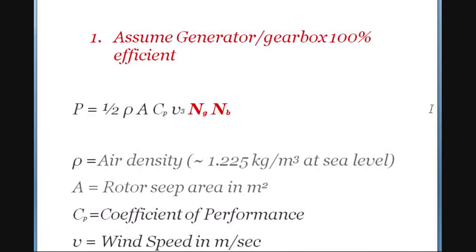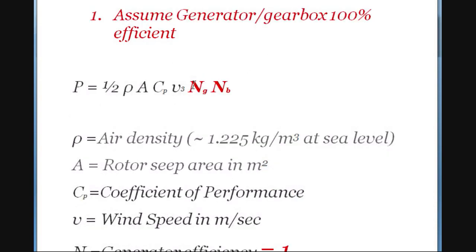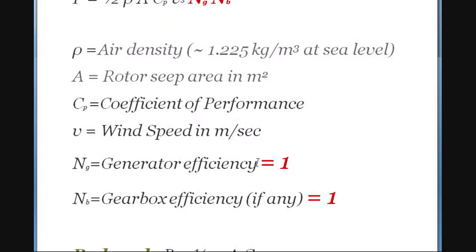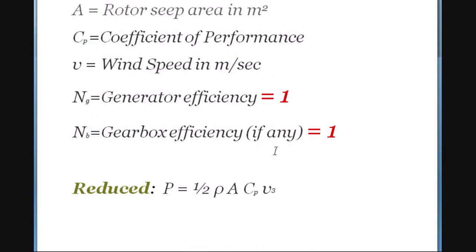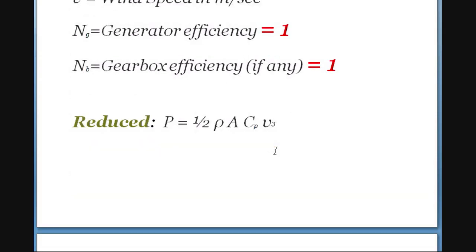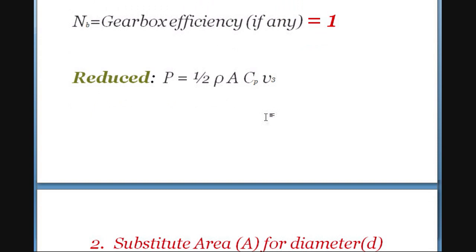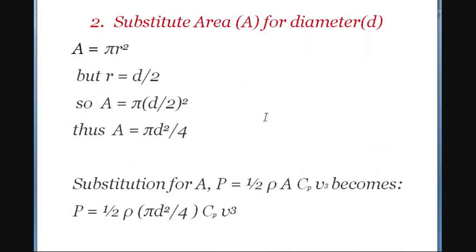So let's take that basic equation and see if we can take some things out of it. One of the first things we can do is just assume that the generator and the gearbox are near 100% efficient. These are two factors on the end which you never see stated in any data sheet anyway. So we can just eliminate those two, assuming they're one. By making that assumption, we can reduce that basic equation down by just dropping those two factors off.